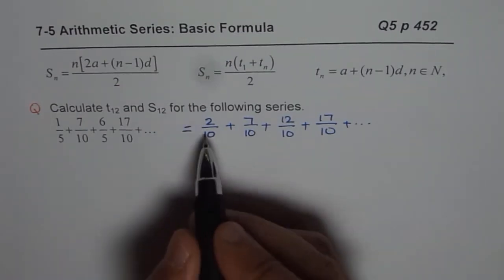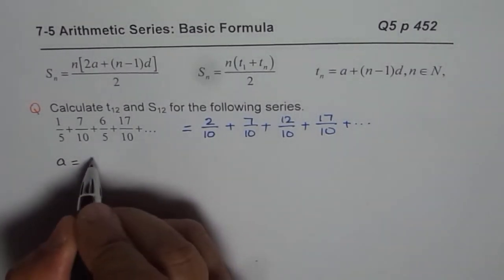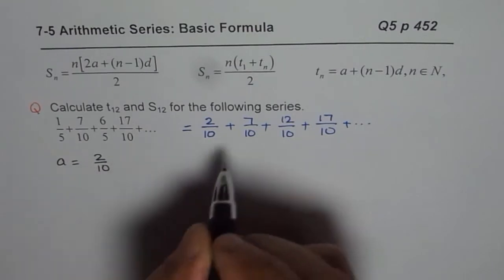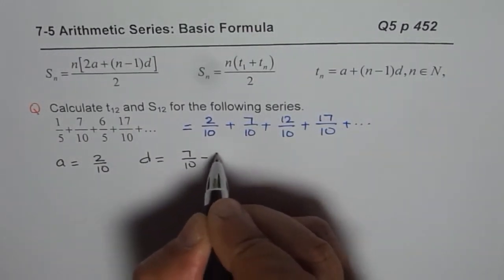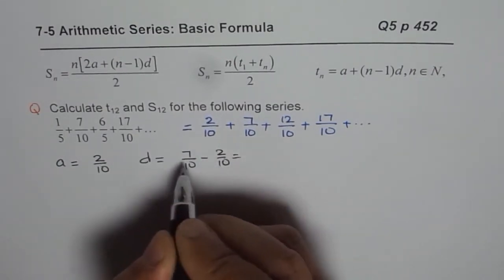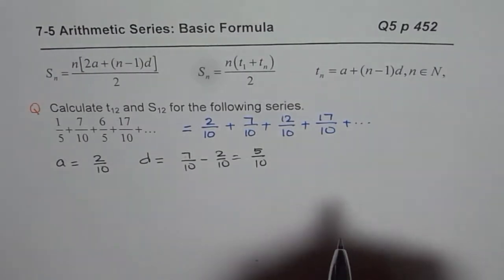Now here what you can clearly see is that the first term A is 2 over 10. The common difference D is 7 over 10 minus 2 over 10 which is 7 minus 2, which is 5, 5 over 10. Let me not simplify it.